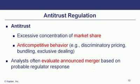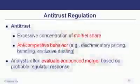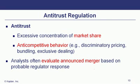Antitrust regulation aims to avoid excessive concentration of market share or anti-competitive behavior, which may cause discriminative pricing, bundling, or exclusive dealing. We saw this in the United States with cable companies looking to merge. Having antitrust regulations promotes domestic competition, and analysts often evaluate announced mergers in cable and telecom based on the probability of regulators' response. Keep in mind, that response can change as regulatory regimes may change as one party gets elected versus another.